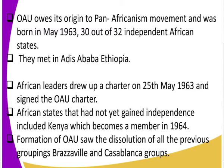The OAU traces its origin to Pan-Africanism, and we have a number of African Pan-Africanists — for example, Kwame Nkrumah, Robert Mugabe, and Nelson Mandela of South Africa. Their unifying factor was the African descent or African origin. The OAU was born in May 1963, and in that year, out of 32 independent African states, 30 of them belonged to the OAU.